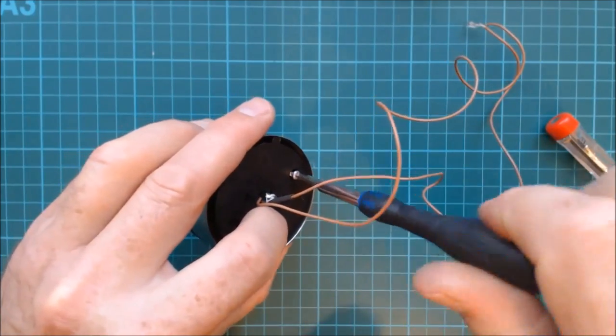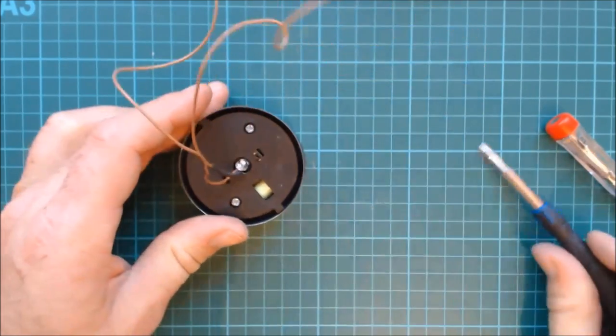Screw the base plate back on. And then check the light still works by connecting the two wires together.